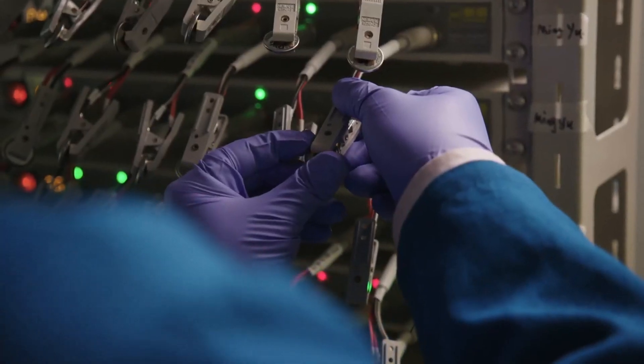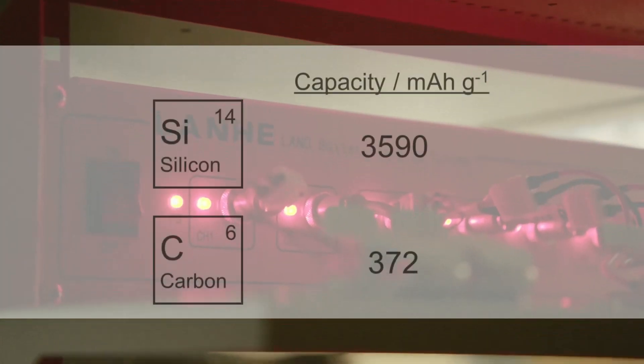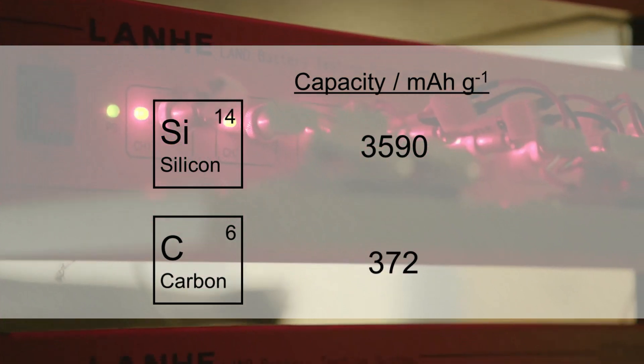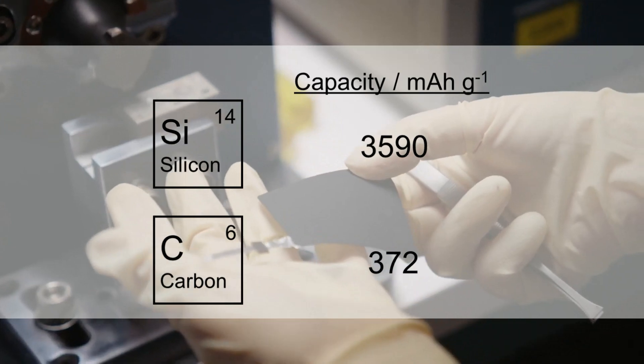This is exciting progress for both the silicon anode and solid-state battery communities. In theory, silicon has 10 times more storage capacity than graphite. But silicon anodes are known for how they degrade in batteries with liquid electrolytes.